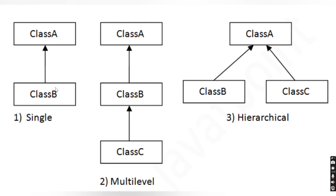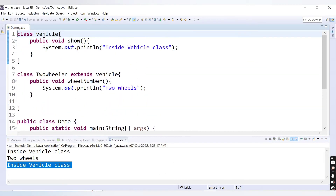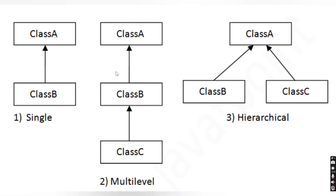That was the practical implementation of inheritance. Now there are different types of inheritance. The first is single inheritance: there are two classes — Class A and Class B — and Class B inherits properties from Class A. The example we used is single inheritance: Vehicle and TwoWheeler, where TwoWheeler extends Vehicle. The second type is multi-level inheritance: Class B inherits from Class A, and Class C inherits from Class B, so Class C has access to properties of both B and A.